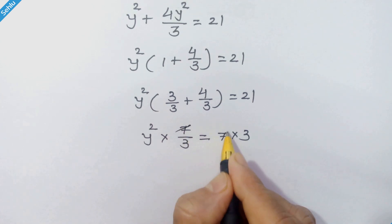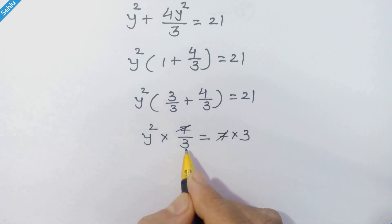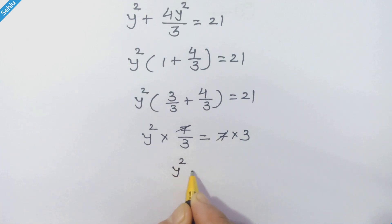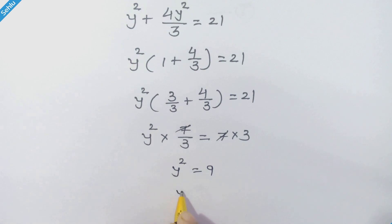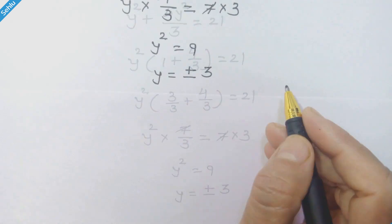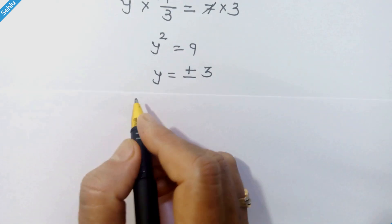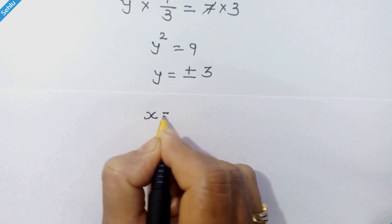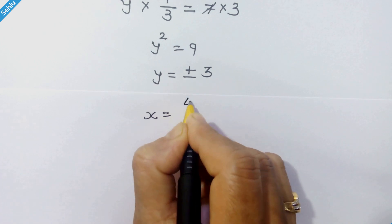That gives us y squared times (7 upon 3) is equal to 21, which is 7 times 3. Moving the 7 over 3 to the right-hand side, the 7 gets cancelled and 3 times 3 is 9, so we have y squared is equal to 9.